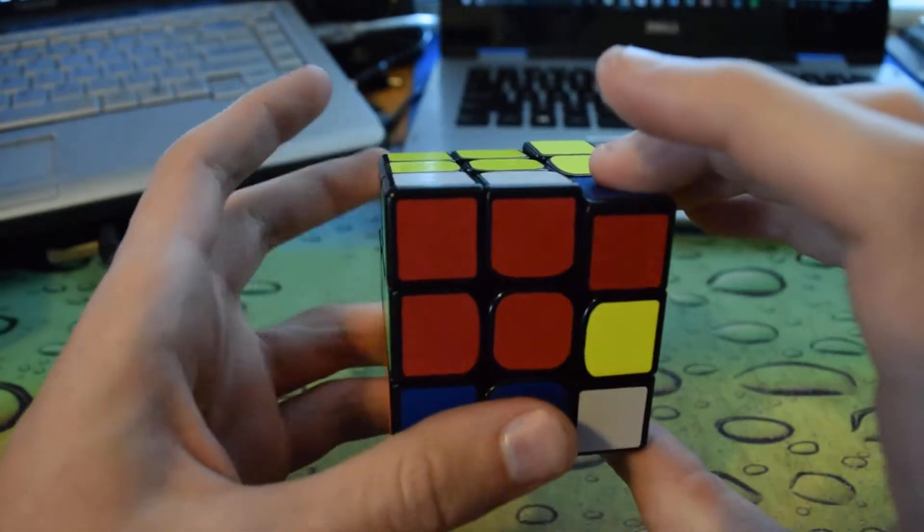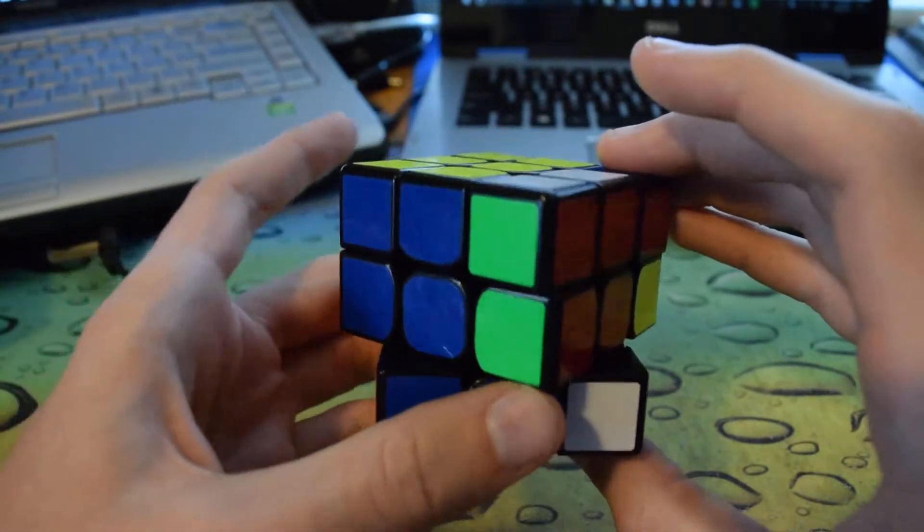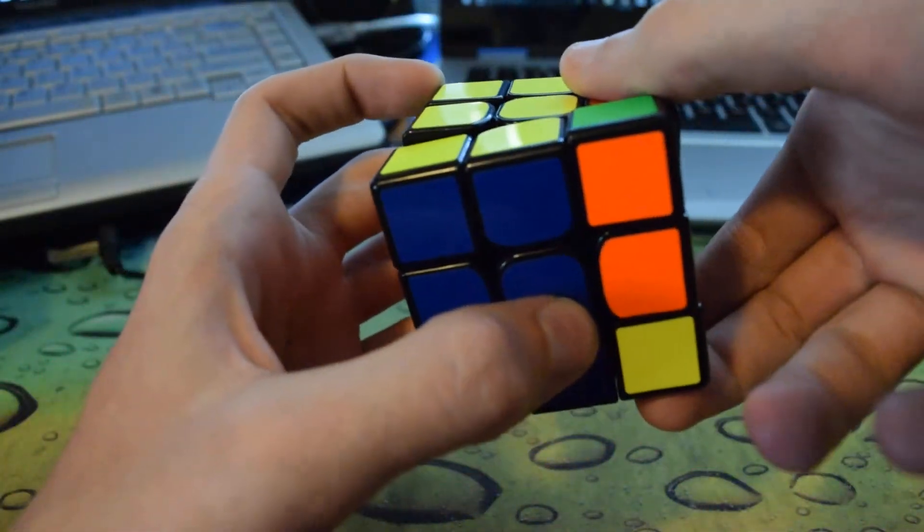R prime, U prime with this left middle finger, R2, and then F prime. This is the tricky part.